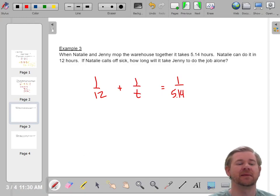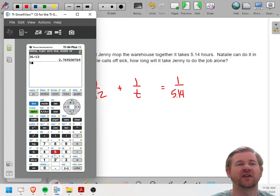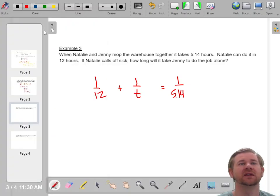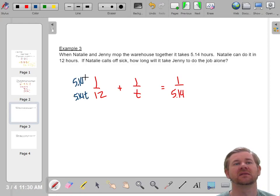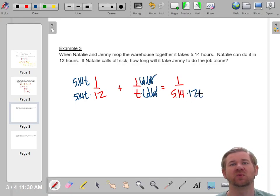So first thing I'm going to do is get a common denominator, and this is just going to be gross, 5.14 times 12 is 61.68. So I'm going to multiply this guy by 5.14t. This guy's going to get multiplied by that number I just said, 61.68. This guy's going to get multiplied by 12t. And now that everything is over that denominator, I can just look at the numerator. So in the numerator, I have 5.14t plus 61.68 equals 12t.